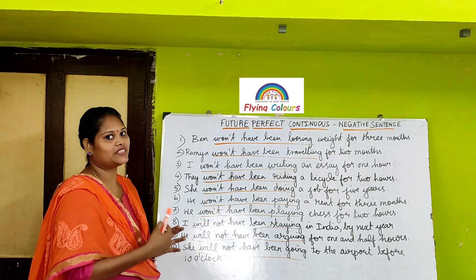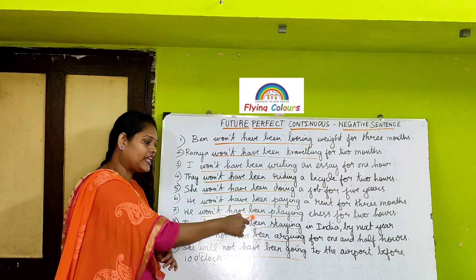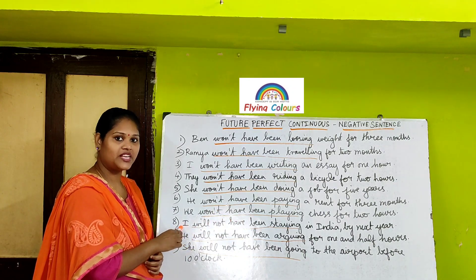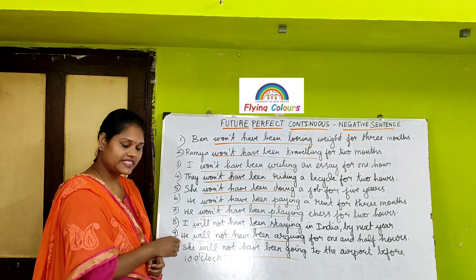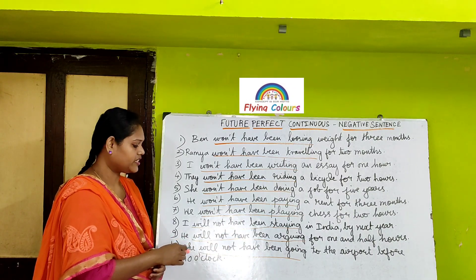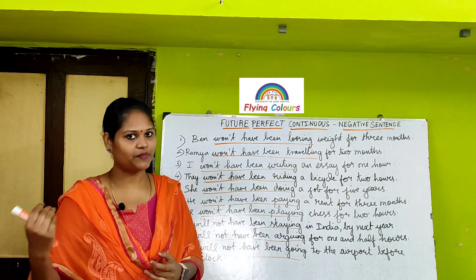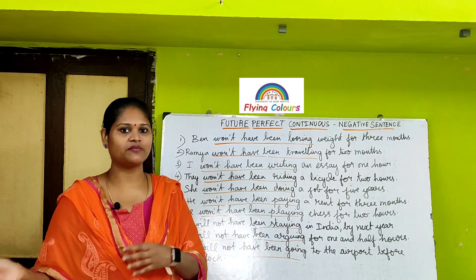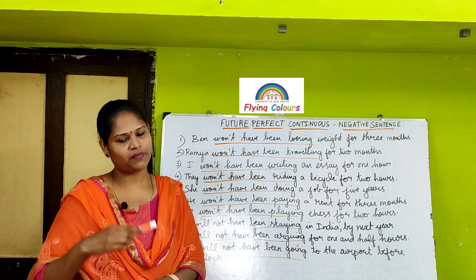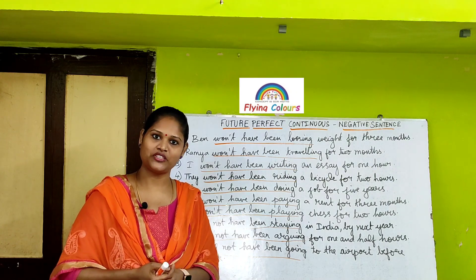Always add -ing to the main verb — that is the present participle. I will not have been staying: I is the subject plus will not have been plus staying is the present participle. I will not have been arguing: he is the subject, will not have been, and arguing is the present participle. She will not have been going: she is the subject, will not have been, and going is the present participle. Future perfect continuous negative sentences are very easy. The formula is: subject plus will plus not plus have plus been plus present participle. If 'been' and present participle appear together, it is a continuous tense — these are the clues to find out the tense.